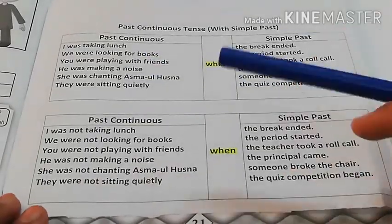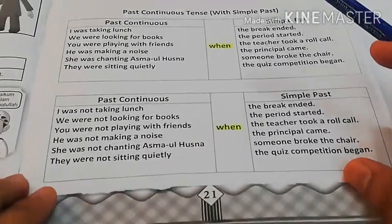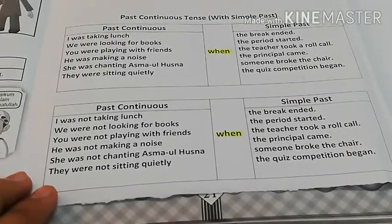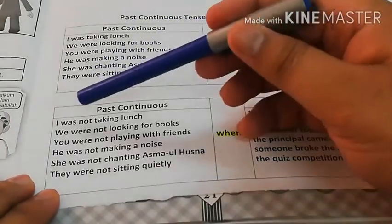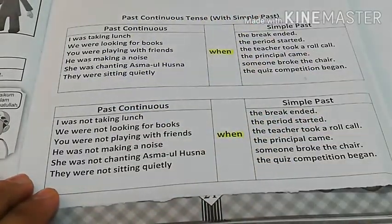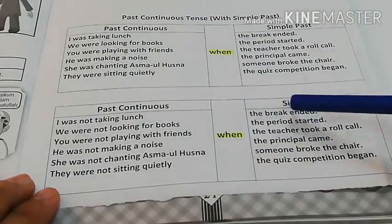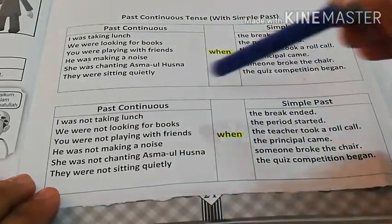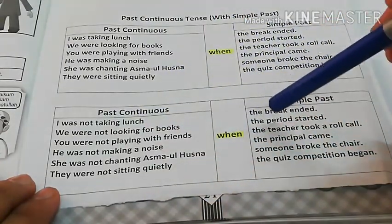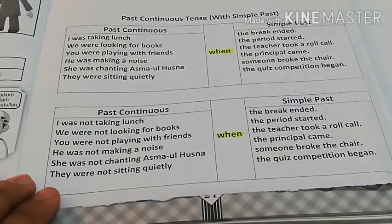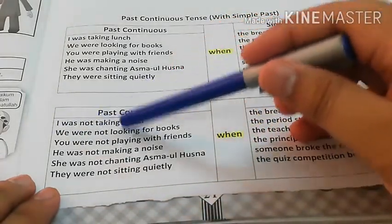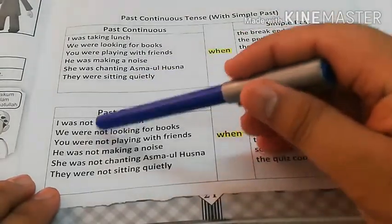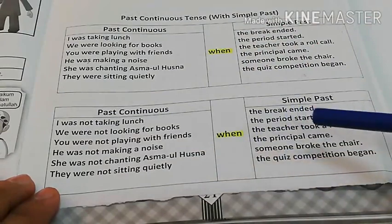Dear students, you will also drill the negative sentences, which are in the second table. I will model it so things become clear. Look at the first sentence: 'I was not taking lunch when the break ended,' or 'I was not taking lunch when the period started.' And you can say: 'I was not looking for books when the principal came.'